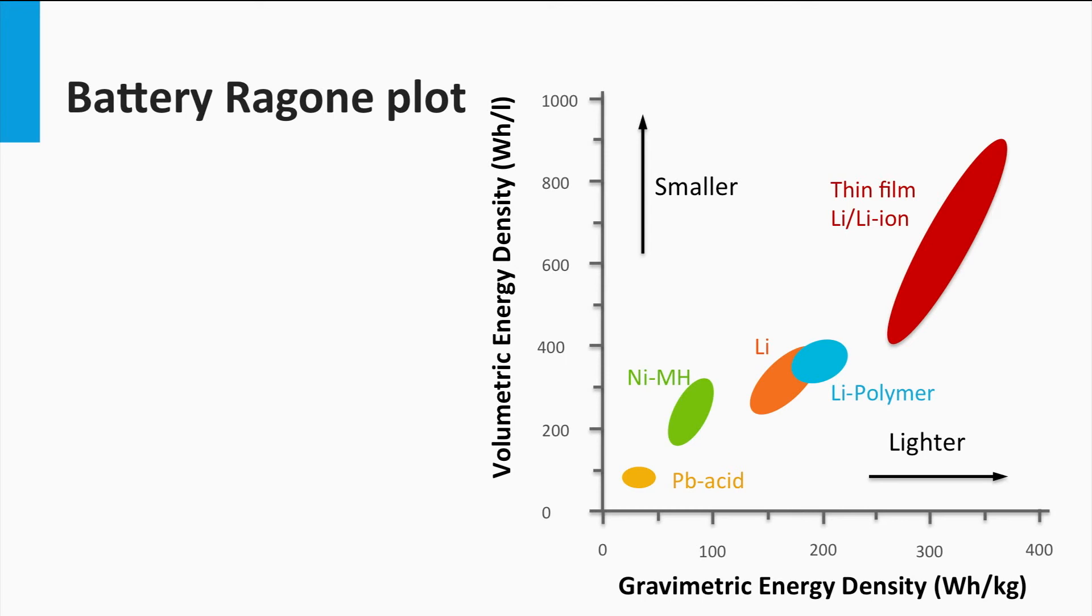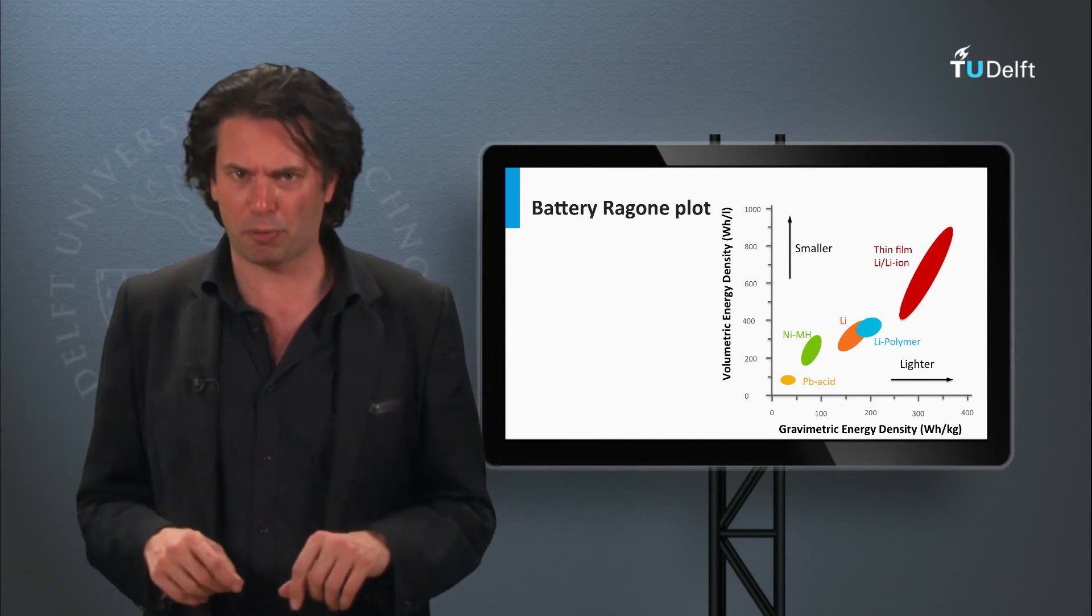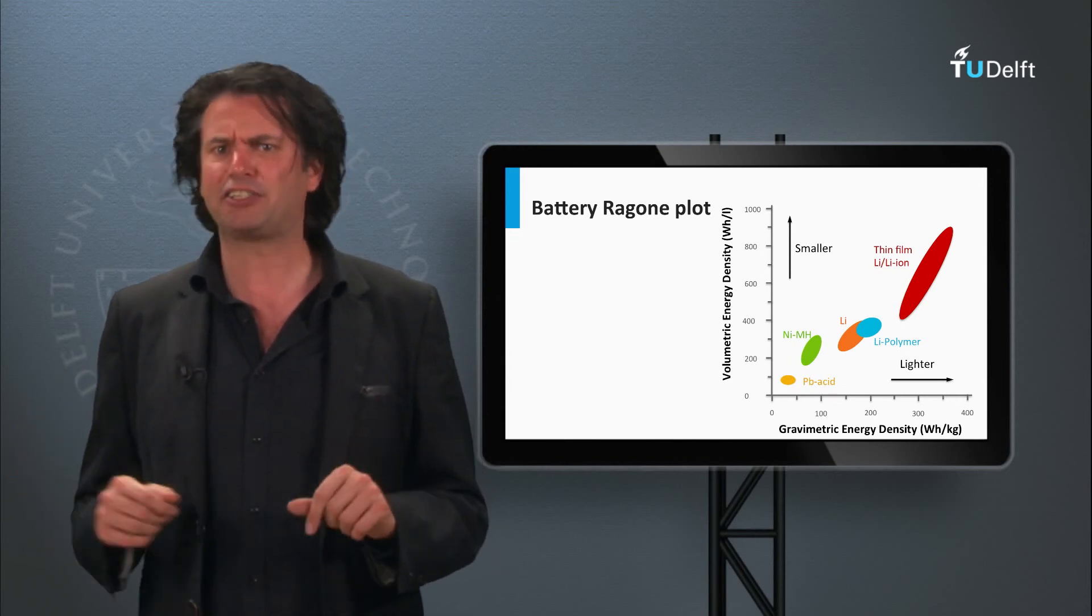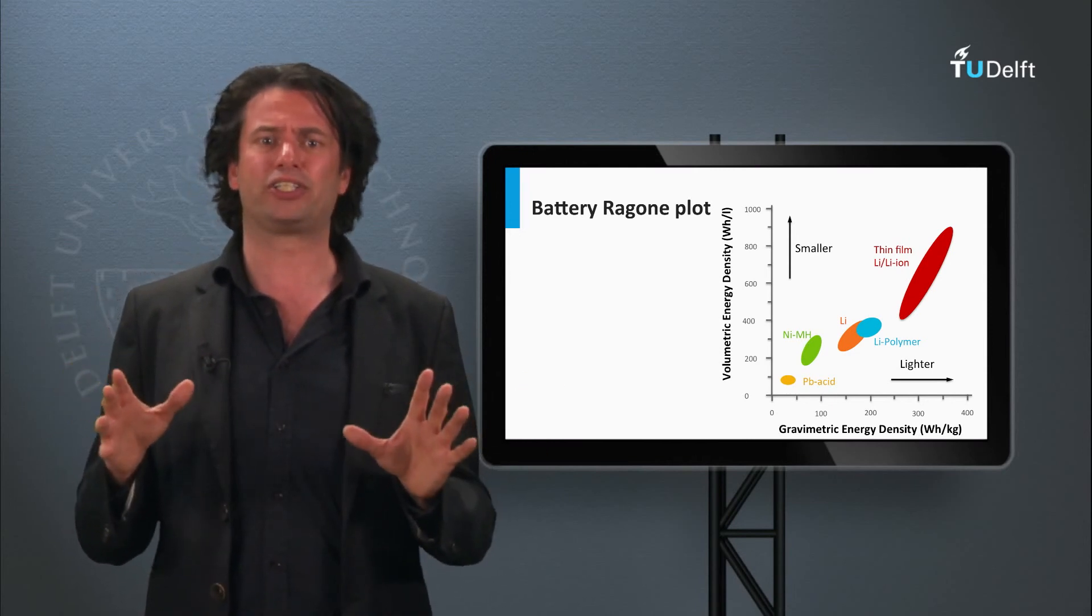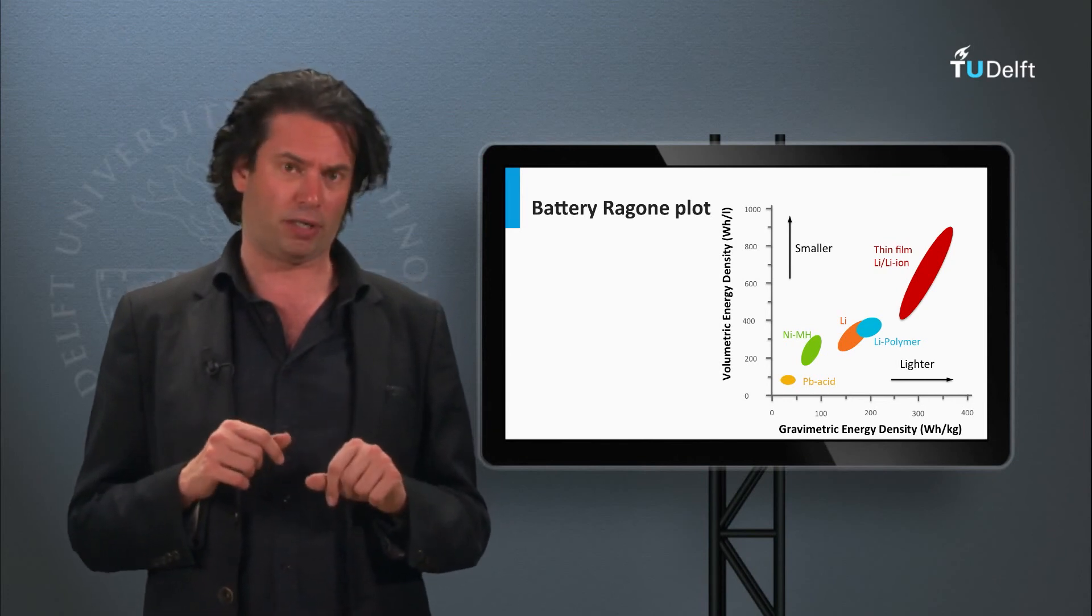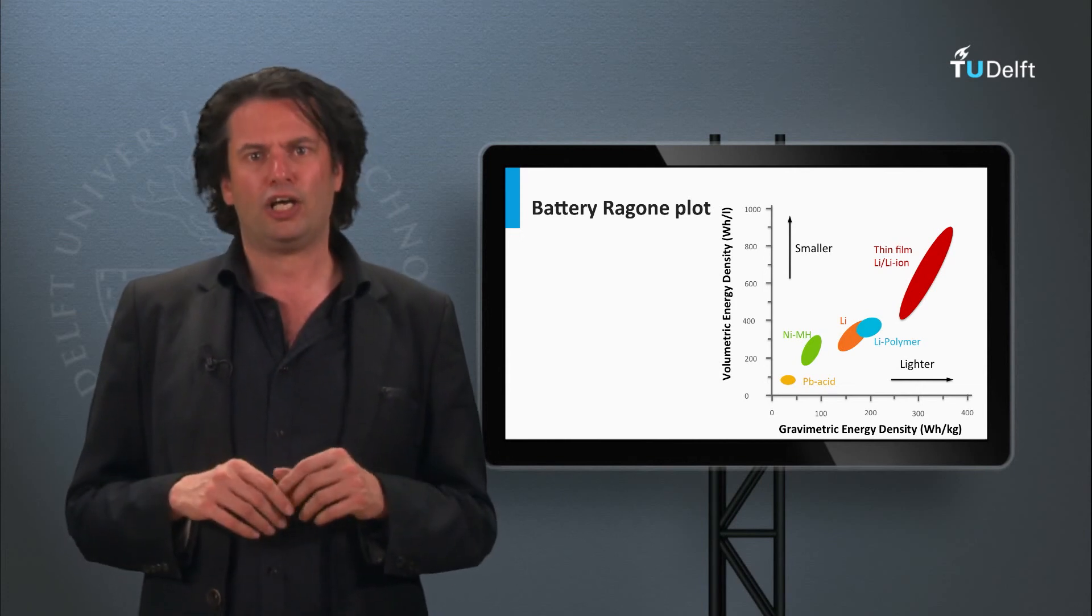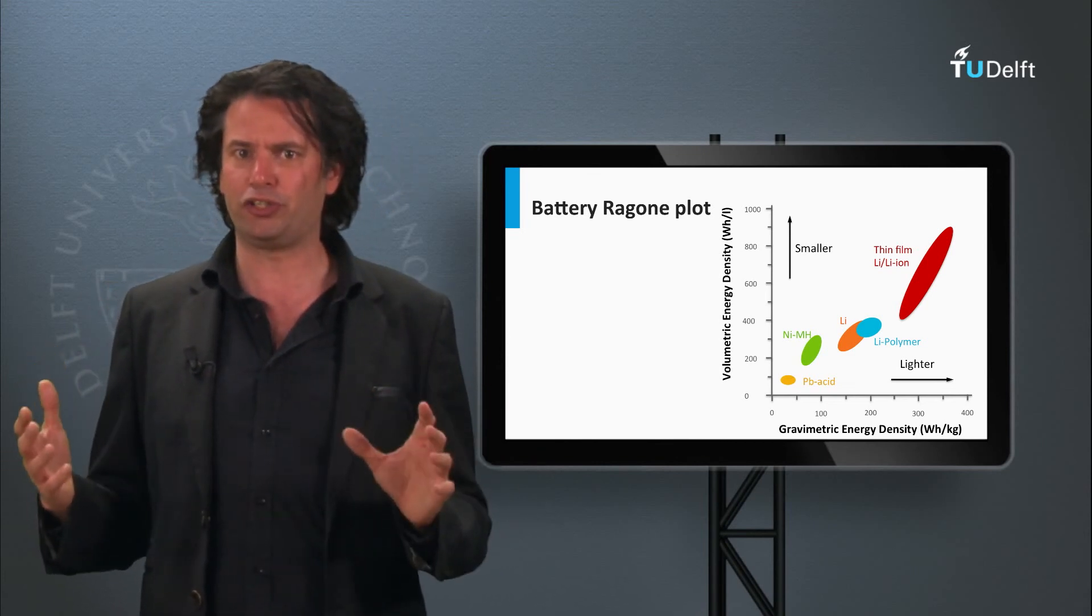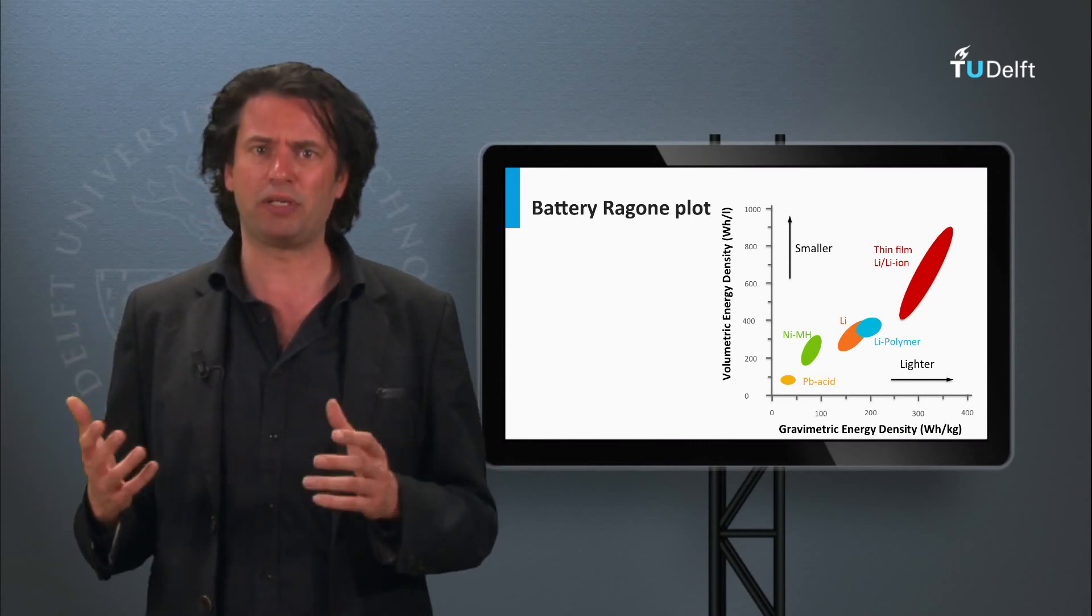As seen, lead-acid shows the lowest volumetric and gravimetric energy densities among the batteries. Lithium-ion batteries show ideal material properties to make it an optimal storage choice. Redox flow batteries have shown a lot of promise in their research phase so far. However, redox flow batteries and lithium-ion technologies are still being heavily researched upon. Consequently, these technologies are also very expensive. Due to the unbeatable maturity and low cost of the lead-acid batteries, they are still the storage technology of choice in PV systems, despite their much lower energy density and extremely low cycle life.